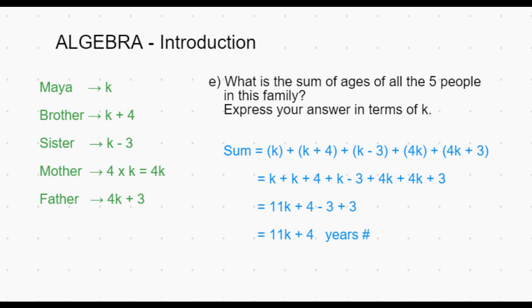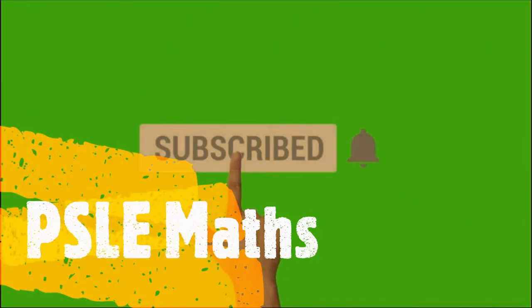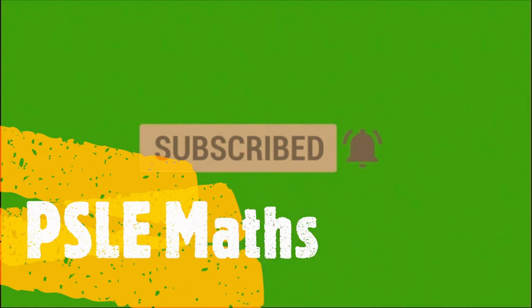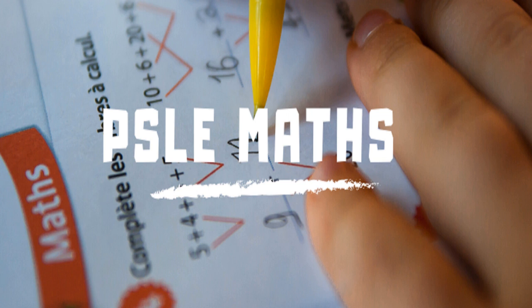In this video we have learned about variable representation — representing an unknown in terms of a known variable — and about algebraic expressions. Algebraic expressions are made of variable components and a constant part. In the upcoming videos, let's do more examples and understand the basic algebra dealt at P6 level. Hope you liked this video. Please subscribe to this channel for more problem sums, and if you have a specific question you'd like to see a video on, please post it in the comment section. Thank you.